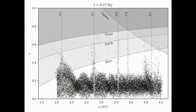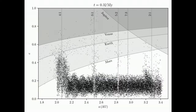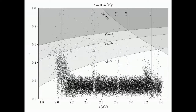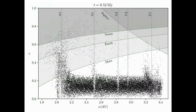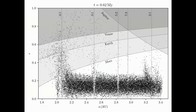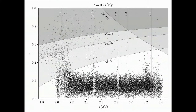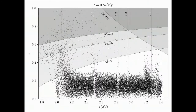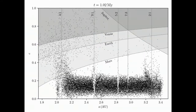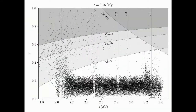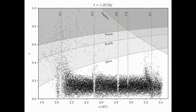Simulation of the formation of the Kirkwood Gaps in the asteroid belt. Initially, 25,600 asteroids are placed on randomly generated low eccentricity and low inclination orbits in the asteroid belt. The orbits of the asteroids are perturbed by Jupiter, Saturn, Mars, the Earth, and Venus.